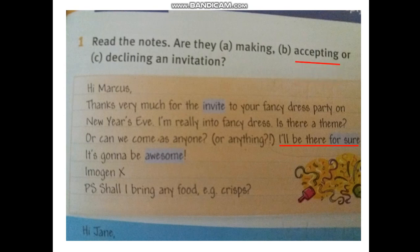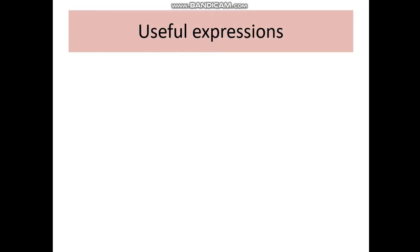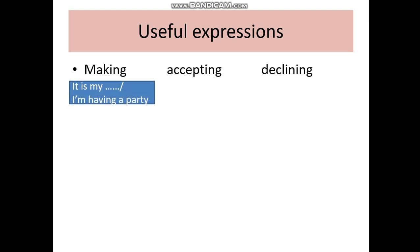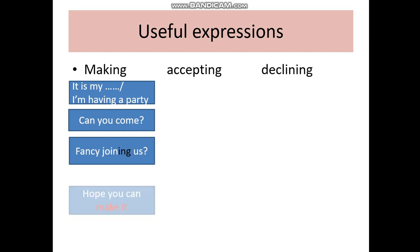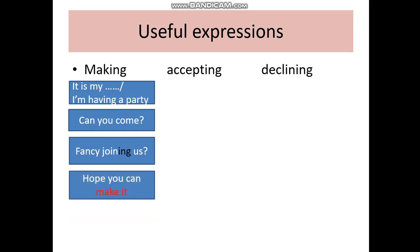In order to write a good message we need to know useful language about invitations. To start the invitation we need to say what kind of party we are having — for example, 'It's my birthday party' or 'I'm having a party to celebrate an end of term.' Then it's a good idea to ask questions like 'Can you come?' or 'Fancy joining us?' When we end the message we can write 'Hope you can make it,' and also ask your friend to reply using phrases like 'Please let me know ASAP.'